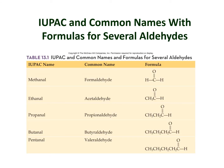Here are IUPAC and common names for the smallest aldehydes: one carbon is methanal (formaldehyde), two carbon is ethanal (acetaldehyde), three carbon is propanal (propanaldehyde), four carbon is butanal (butyraldehyde), and five carbon is pentanal (valeraldehyde).